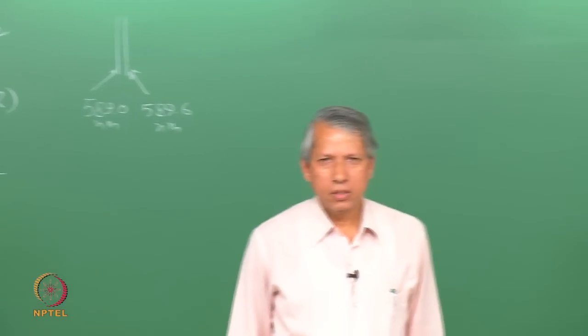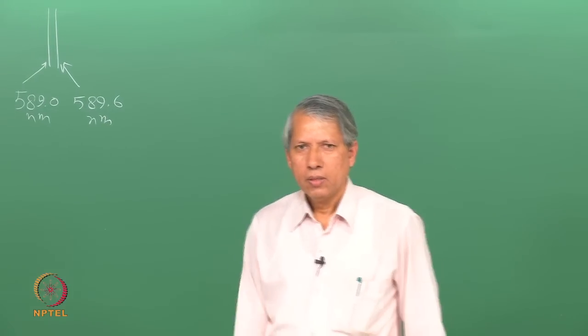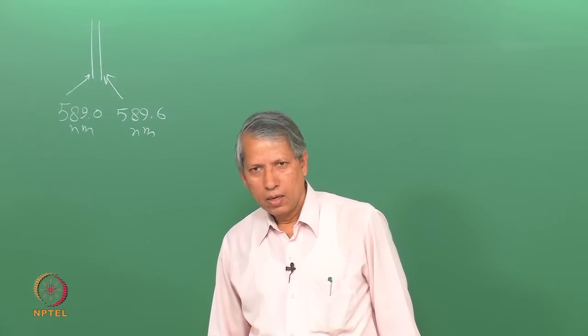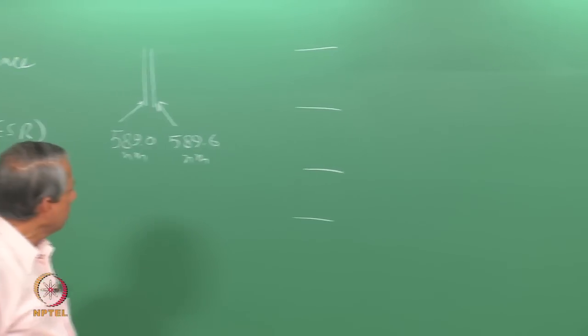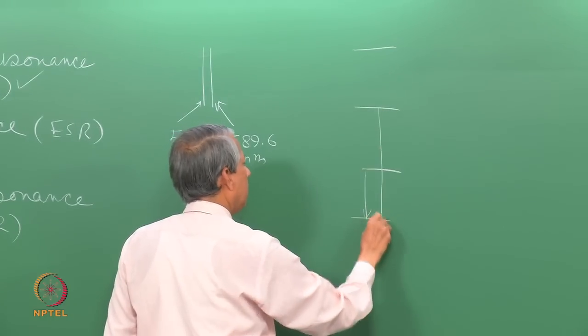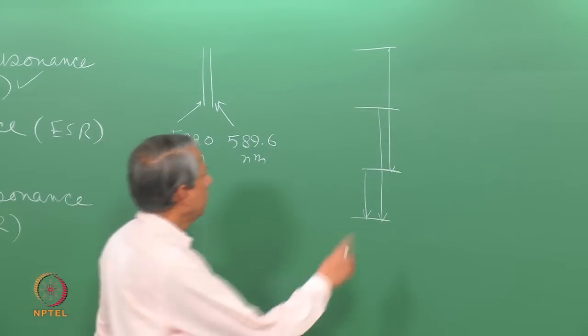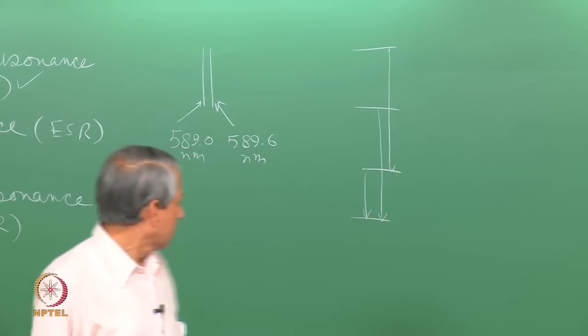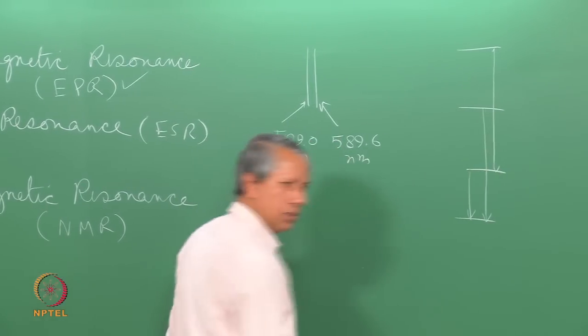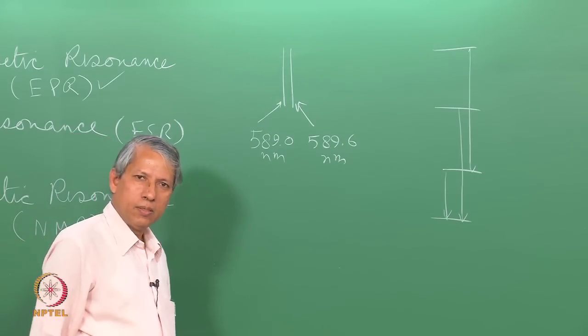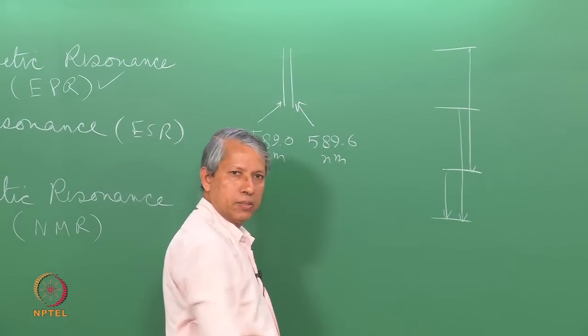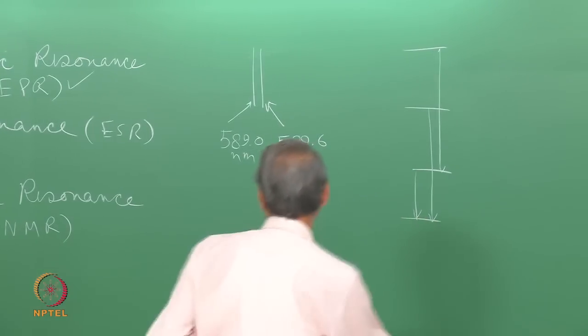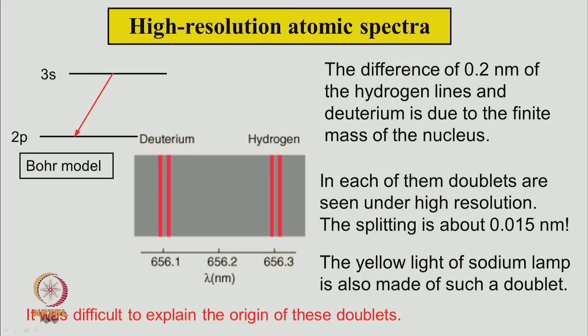Even sodium atom for that matter, the bright yellow light that you see in the street lamp that also has pair of two closely lying lines. This is very close to each other. So, it is very difficult to explain these doublets. By then, Bohr's model of hydrogen atom came. The two revolutionary ideas were that the atoms have discrete energy levels and the absorption or emission of radiation takes place because of transition from one discrete level to another discrete level. That is the first key proposal of Bohr. So, this discrete nature of energy levels could very easily now explain the discrete spectral lines seen in the spectrum.